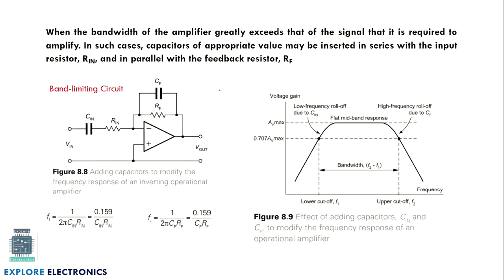If the bandwidth of the amplifier exceeds that required for the input signal, we need to restrict it using capacitors C_f and C_in included with the inverting amplifier. A capacitor in series with R_n and in parallel with R_f can reduce the bandwidth. F1 is calculated as 1 / (2π × C_in × R_n) and F2 is 1 / (2π × C_f × R_f), defining the two cutoff frequencies in the frequency response.